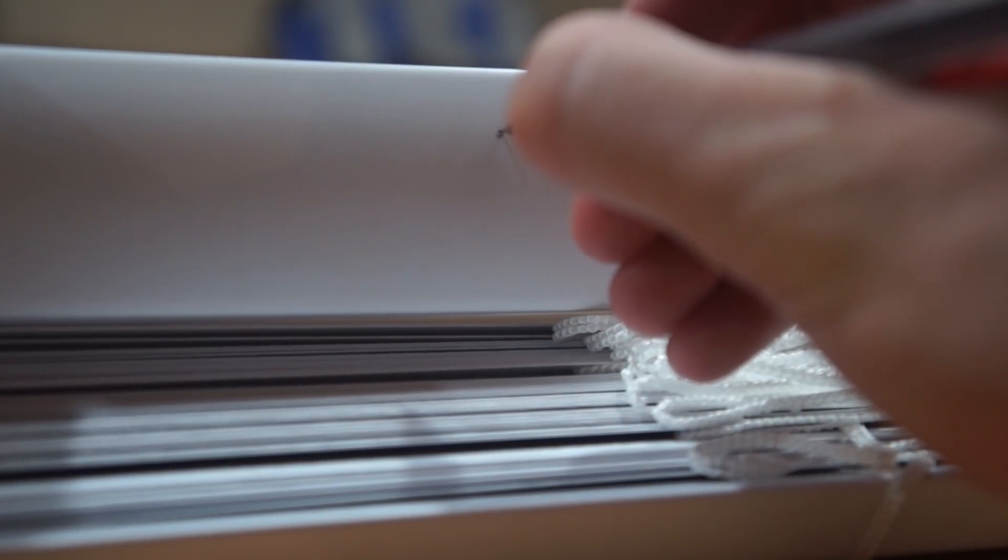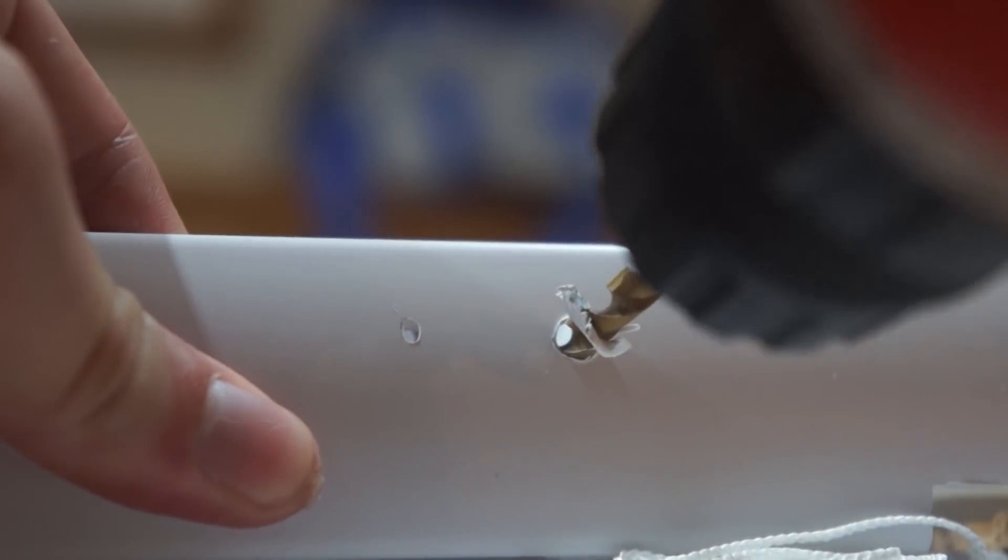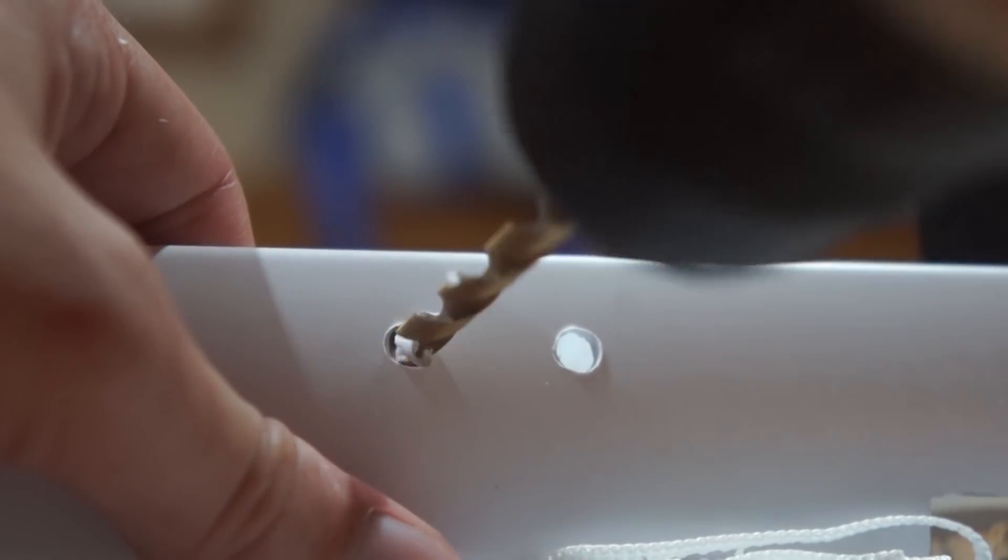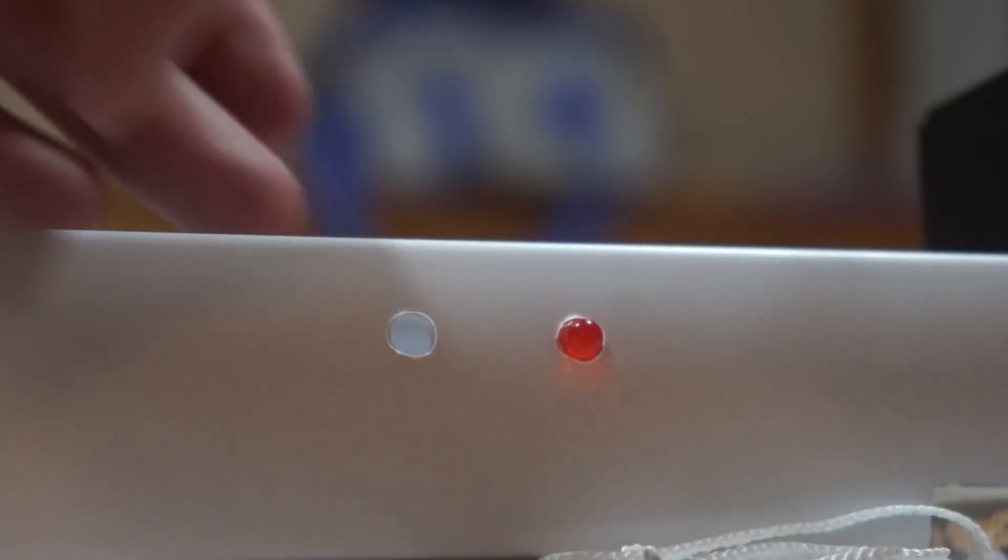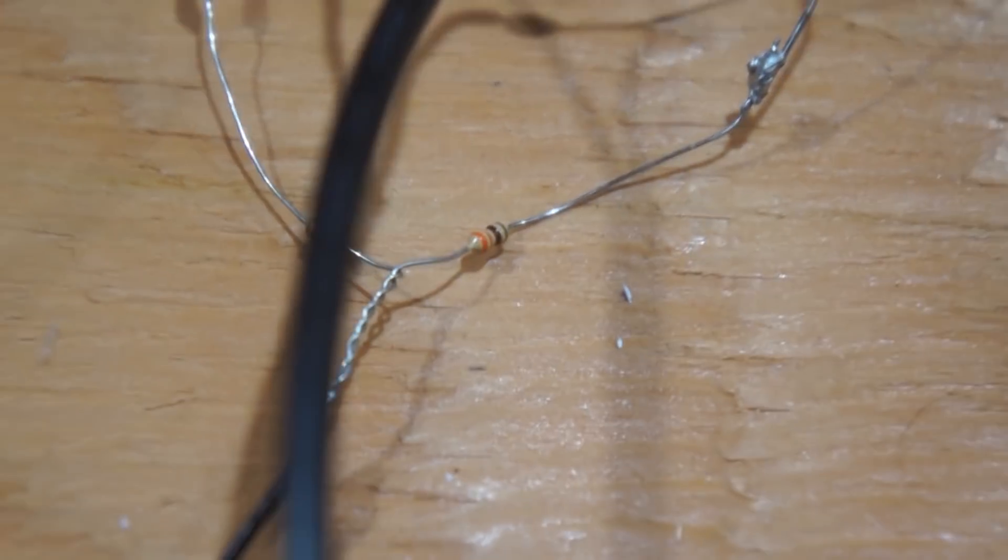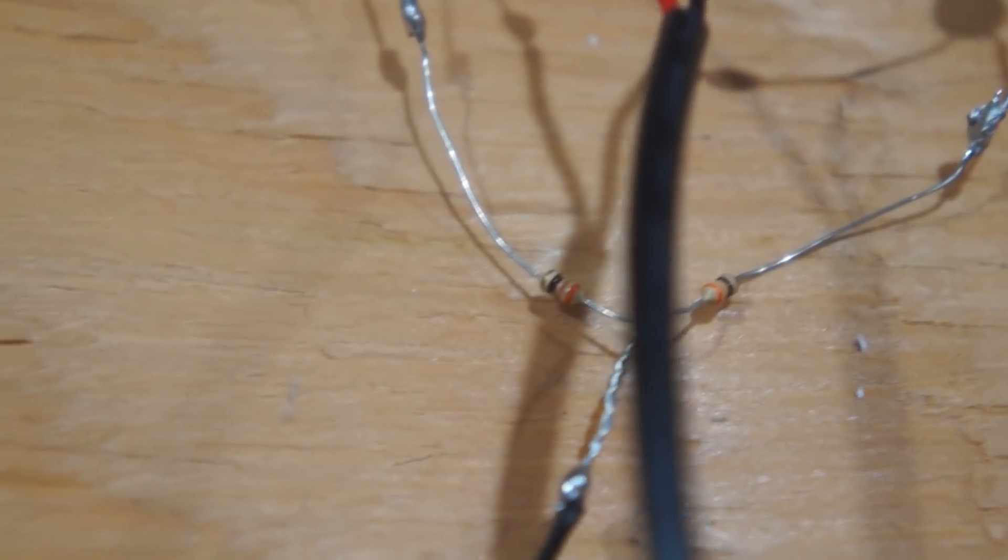Now we're going to be using two LEDs as a visual feedback system for operations. Drill the holes to fit them. Here's just a small jury rigging circuit. We have the data lines connected here and then the resistors are tied to ground.